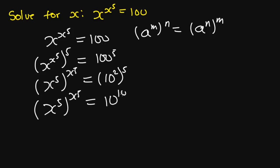So from here we are going to have x exponent 5 all exponent x exponent 5 is equal to 10 exponent 10. And since we are having same bits and the same exponents, we can see that x exponent 5 is equal to 10.